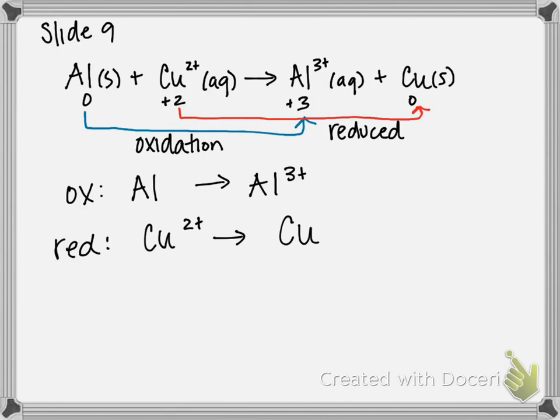Step 3 is to balance each half reaction with respect to hydrogen and oxygen. To balance oxygens, we add water to either side; to balance hydrogens, we add H⁺ ions. In this problem, we don't have any oxygen or hydrogen atoms to balance, so we're skipping step 3. In the next example I'll show what adding H₂O or H⁺ looks like.